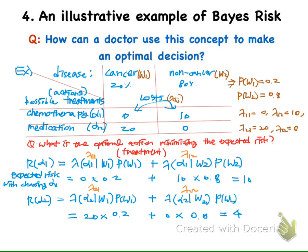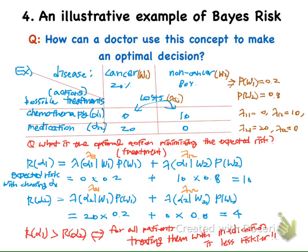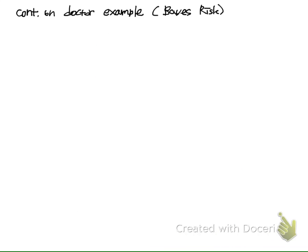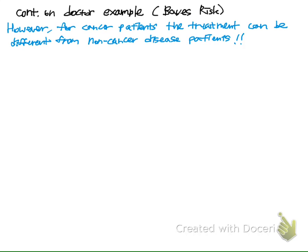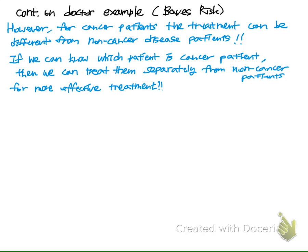By comparing these two expected risks, we can say that in general it is riskier to treat the patient with chemotherapy for both patients if we don't know which patient is which. For all patients, treating them with medication is less risky — it is the more optimal decision in this setting. But we can think that for cancer patients, the treatment can be different from non-cancer disease patients. If we can know which patient is a cancer patient, then we can treat them separately from non-cancer patients for more effective treatment.